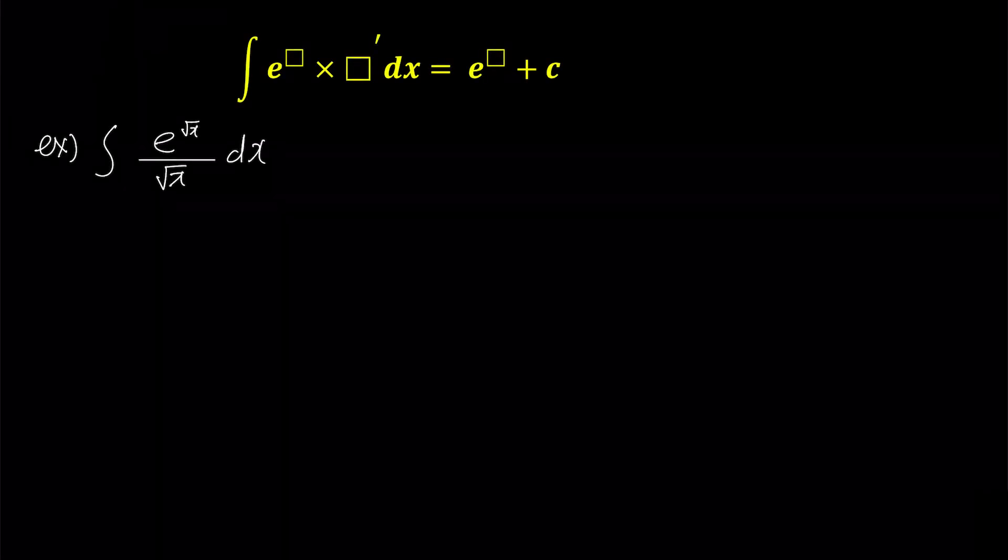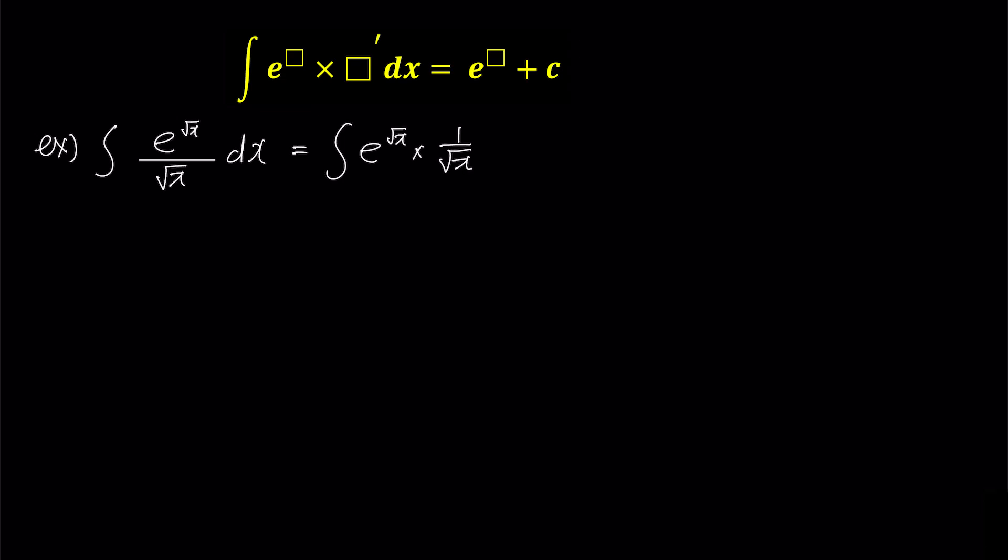Alrighty folks, time for example number 3. This one's a doozy. We gotta separate that pesky square root of x in the denominator, and we write it as e to the power of root x times 1 over square root x. Why? So we can find the perfect ingredients for our trusty box and box prime, of course.